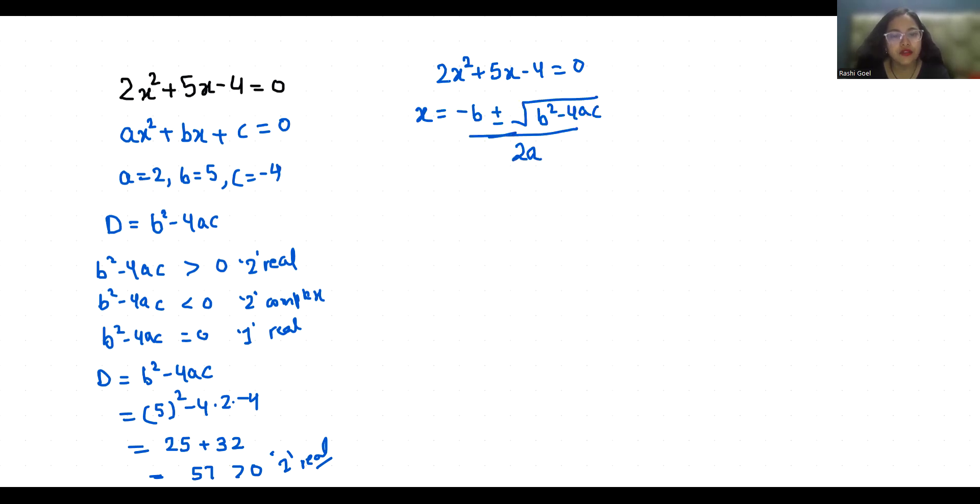So -5 ± √(we already calculated b² - 4ac, that is 57) / 2a. The value of a is 2, so 2 × 2. So -5 ± √57 / 4.